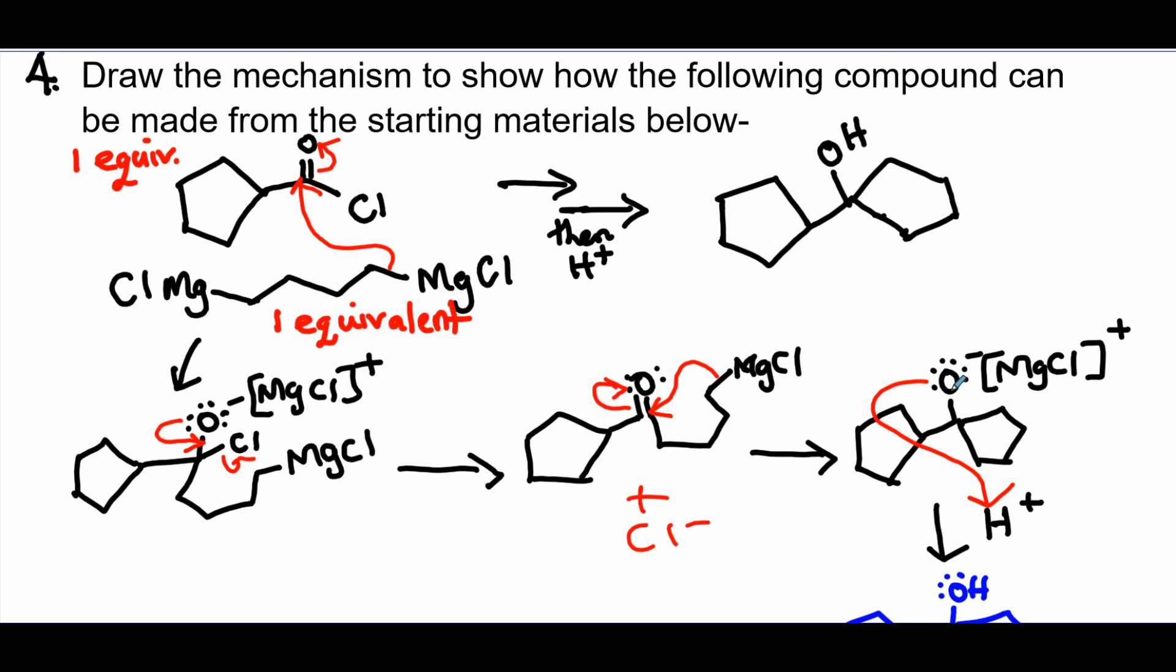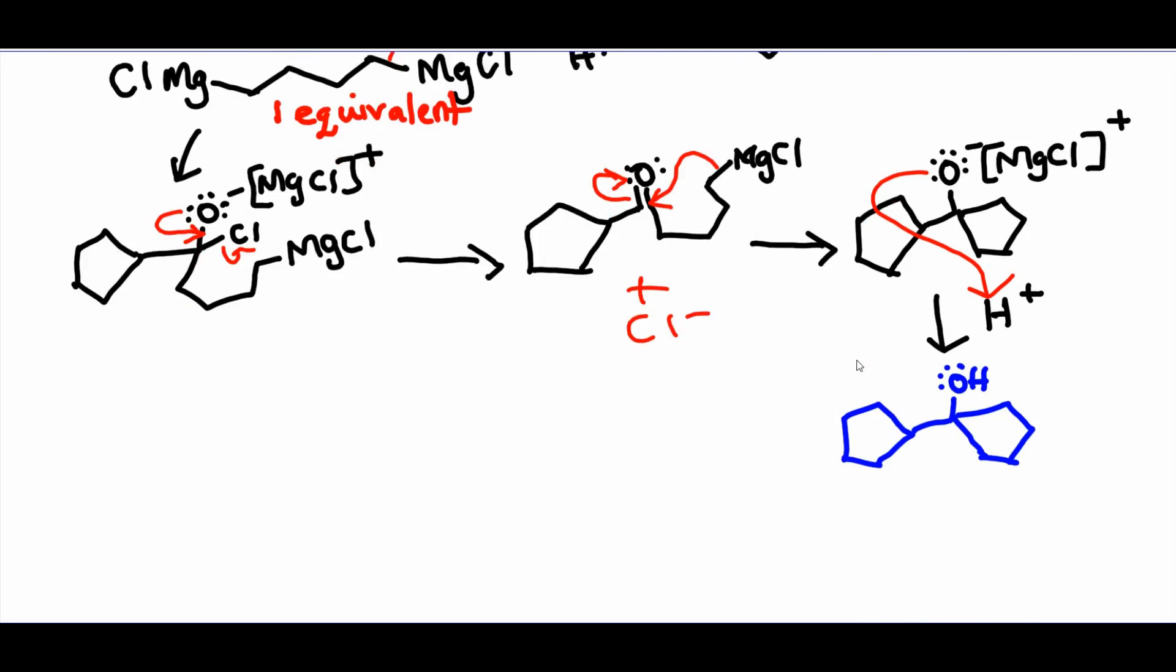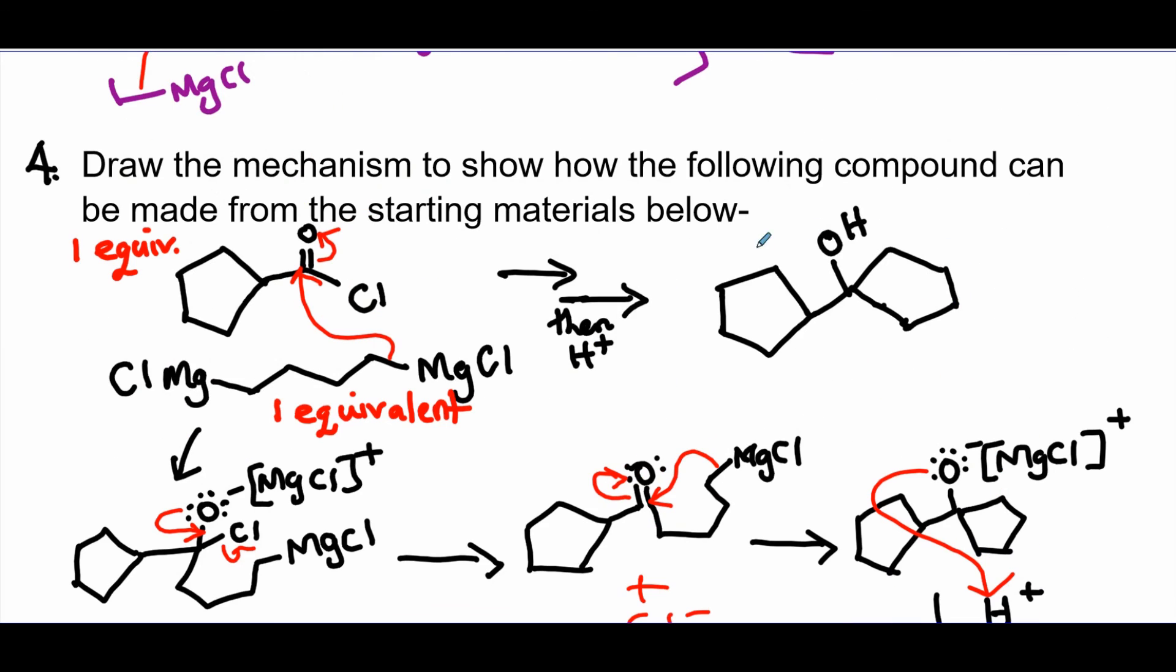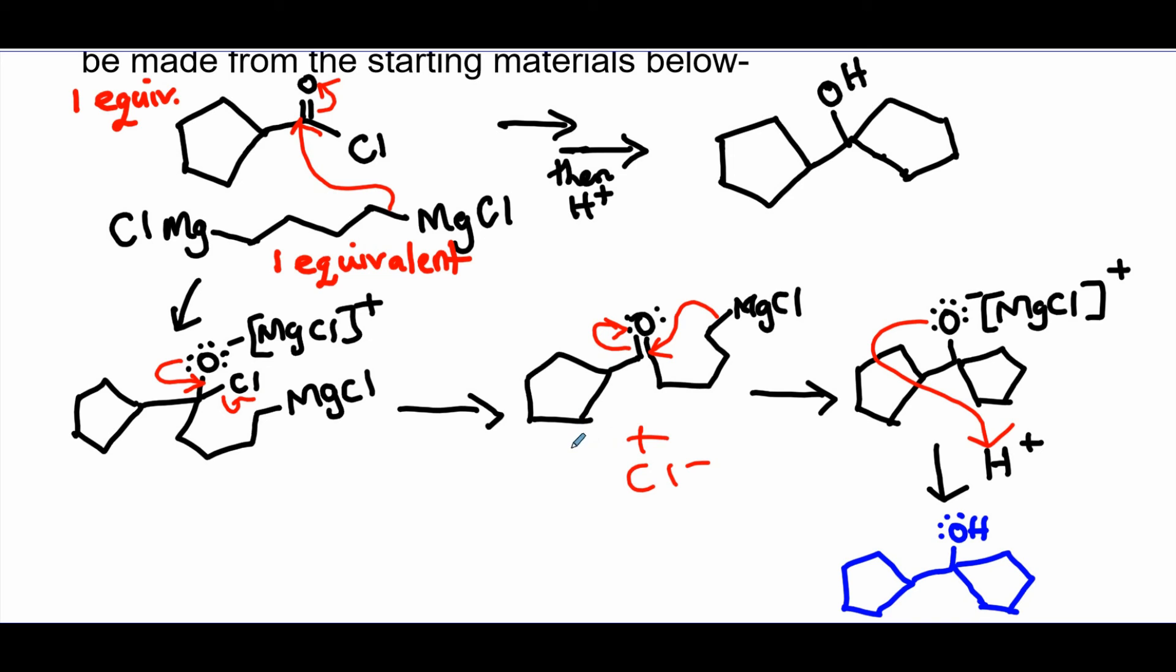And then you do a second Grignard to the ketone that just formed. It opens up. You get the O- and finish by quenching. Quench, you get your tertiary alcohol, which is the product that you're asked to show how it's formed. So that's the mechanism on this question.